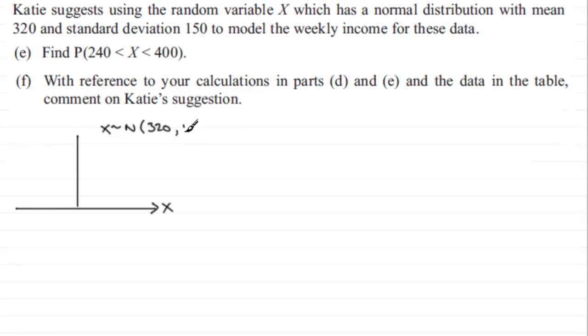Remember, X is distributed normally with a mean of 320 and standard deviation of 150, so that's the variance 150 squared. I've marked my 320 for the mean there. We've got our normal distribution looking something like this.